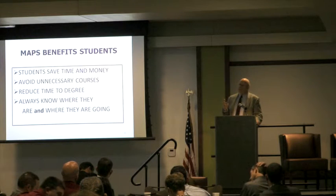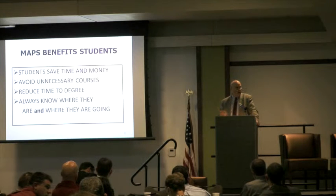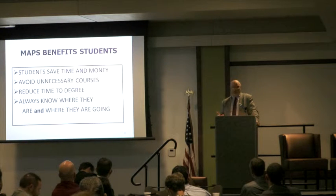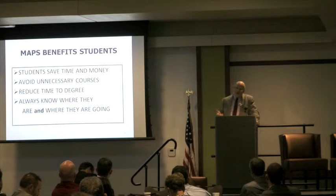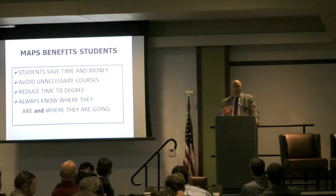At Florida State, our tuition — which is relatively low — has gotten out of control. It increased so quickly that, by the time you add fees, we went from $1,800 a year to $6,000 a year. Then you add room and board and it's about $20,000–$22,000 a year. Every year a student stays in school longer costs a lot of money.